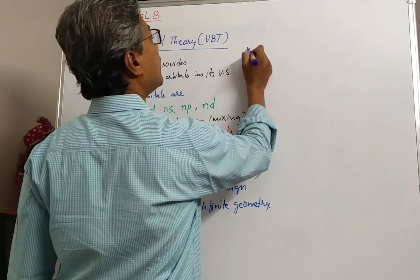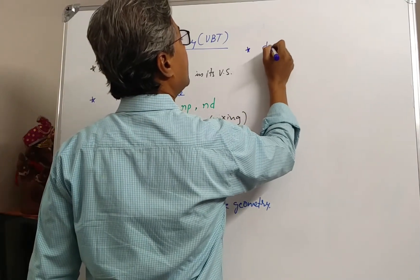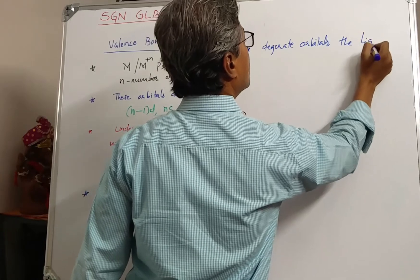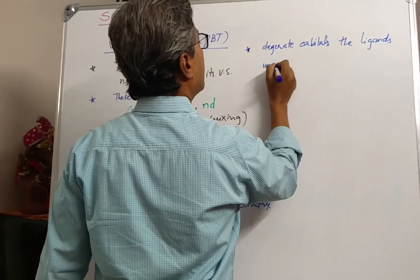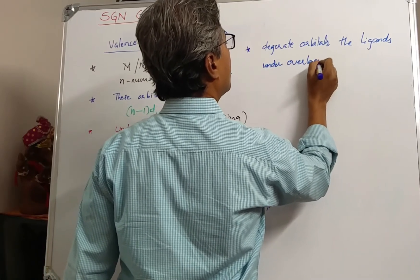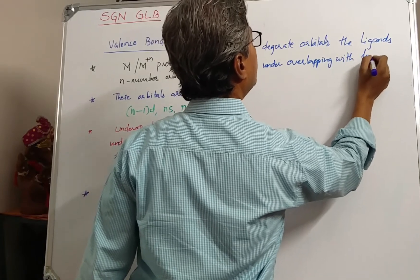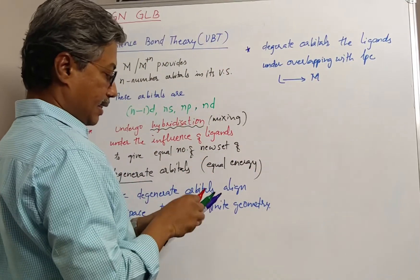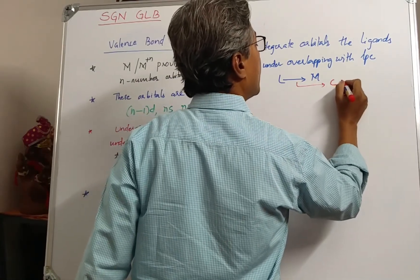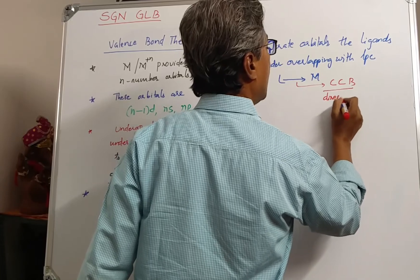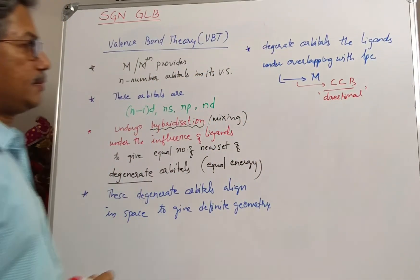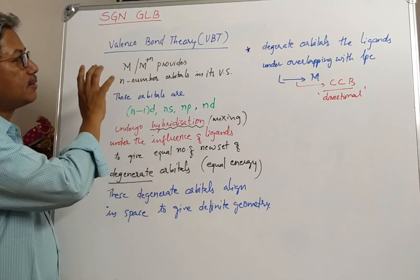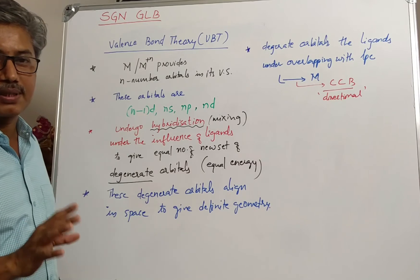Next, with these degenerate orbitals, the ligands undergo overlapping with their lone pair of electrons to form ligand-to-metal bonding. This bonding is called a coordinate-covalent bond, which is directional in nature. Based on these principles, some of the special characteristic properties of complex compounds can be explained.